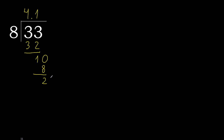Always complete with 0. The point is here: 20. 8 multiplied by 3 is greater. Multiplied by 2 gives 16, which is not greater. Subtract 4.